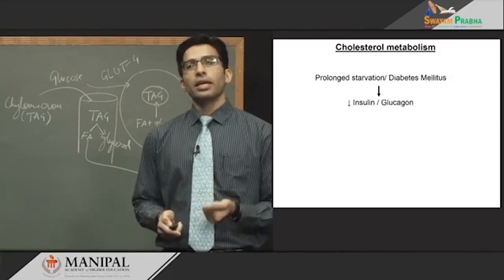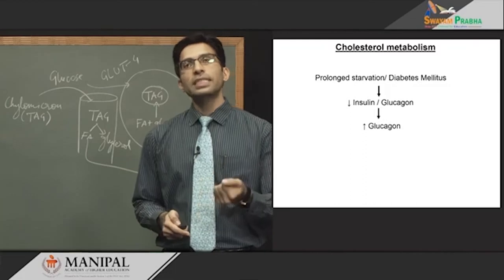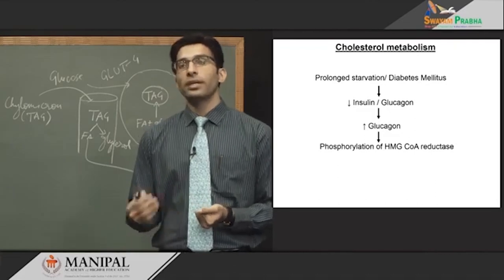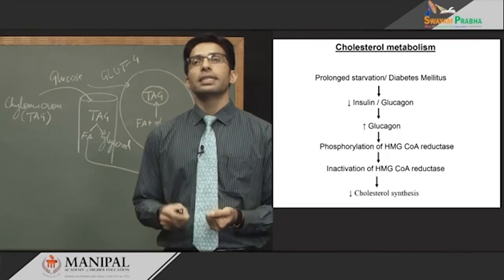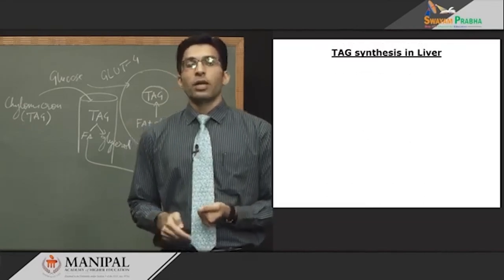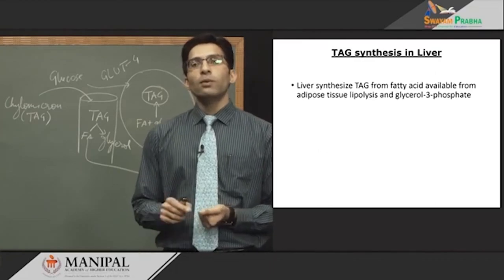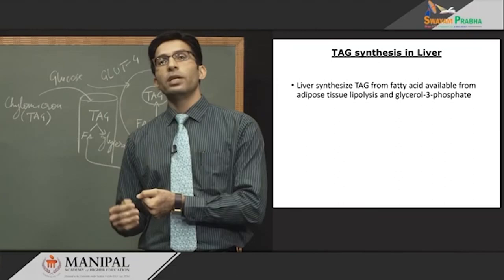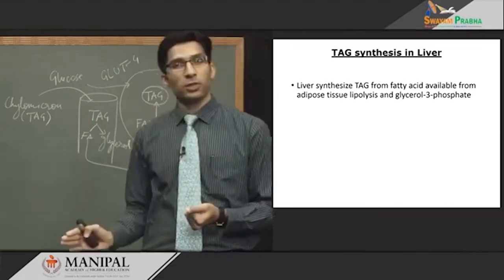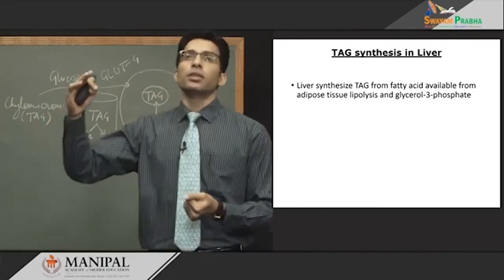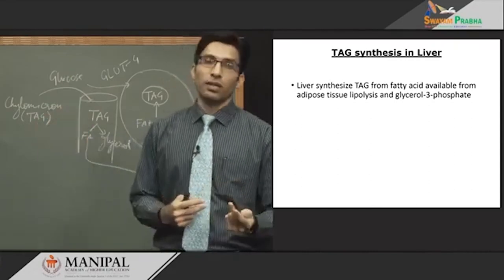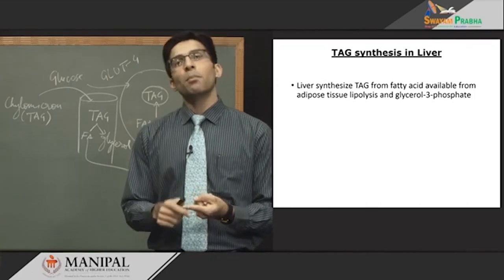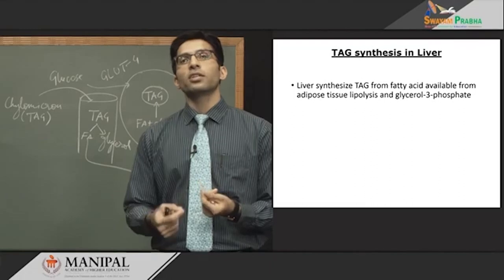Regarding cholesterol metabolism, because of decreased insulin and increased glucagon, HMG-CoA reductase is deactivated by glucagon, resulting in decreased cholesterol synthesis. For TAG synthesis in the liver: so much lipolysis occurs at the adipose tissue level in the absence of insulin, sending excess fatty acid to the liver. This fatty acid has two fates: beta-oxidation for energy, or combination with glycerol-3-phosphate to form triacylglycerol (lipogenesis) in the liver.